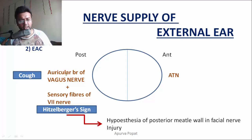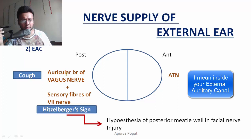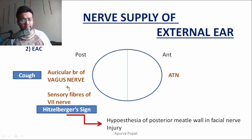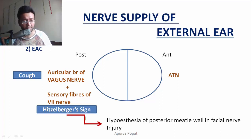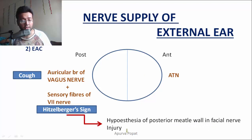If you stimulate the pinna — for example, if you put a matchstick inside and hit the posterior wall — the vagus nerve will be stimulated and that can initiate a cough reflex. If the sensory fibers of the seventh nerve are damaged, you won't feel any sensation in the posterior wall. This happens in acoustic neuroma where the seventh nerve is damaged. There is paresthesia or hypoesthesia of the posterior meatal wall in facial nerve injury, and that sign is called Hitzelberger sign.